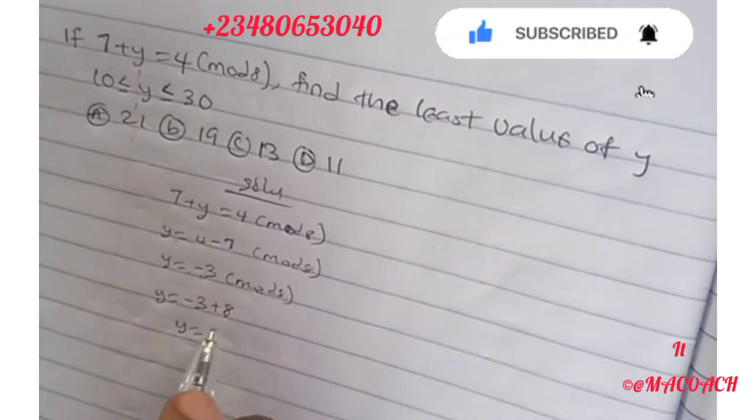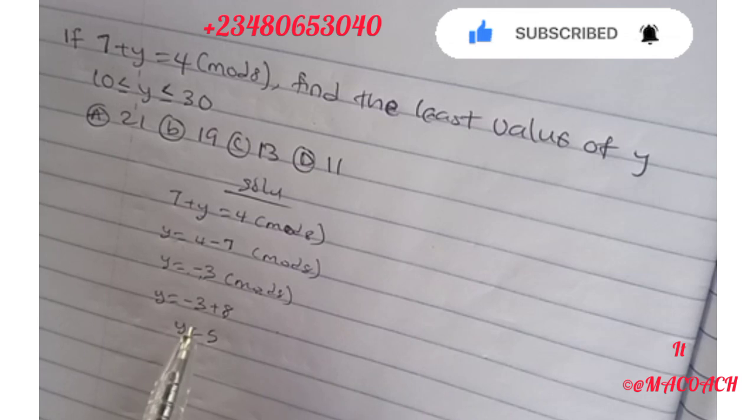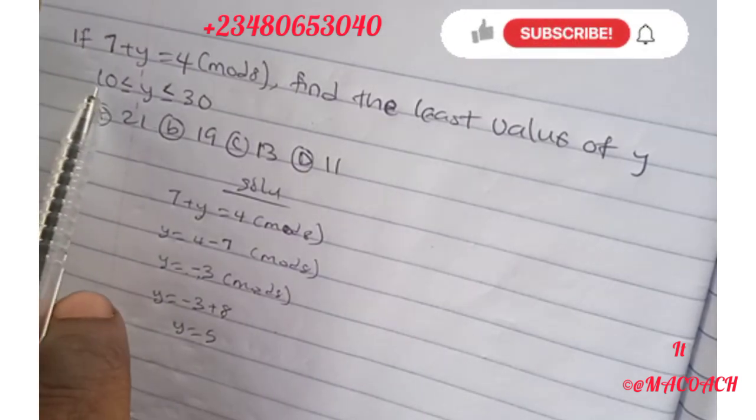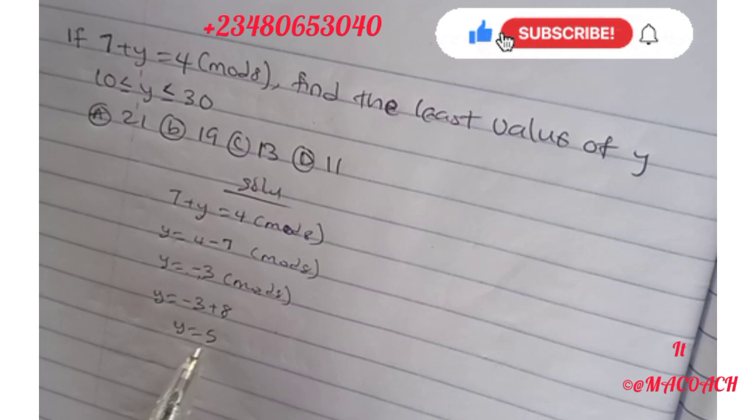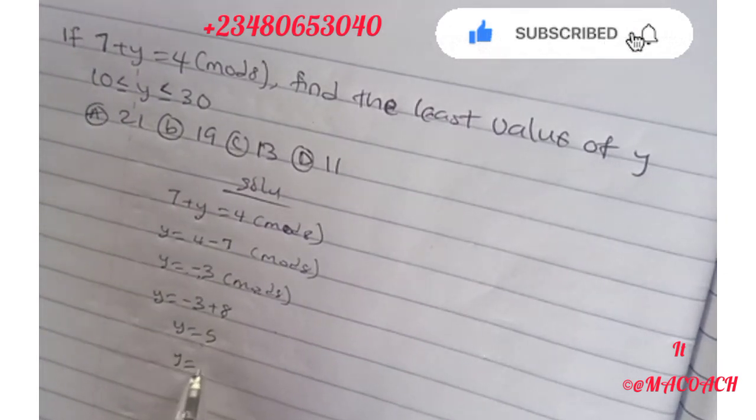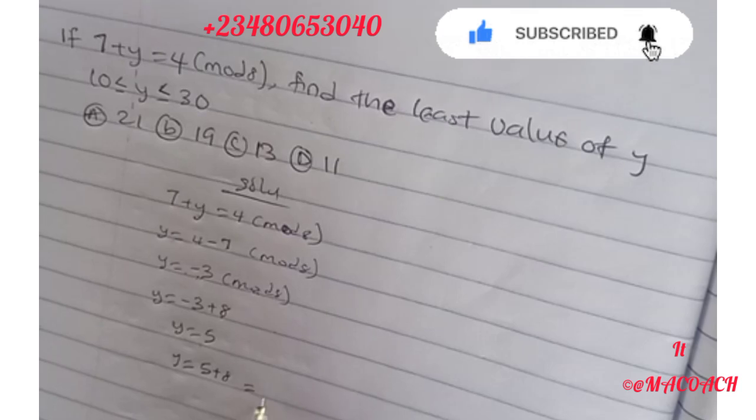Our y is 5. In this problem, we're given the range 10 ≤ y ≤ 30. Five is not between this range, so the next thing to do is add 8 to it again. 5 + 8 = 13.